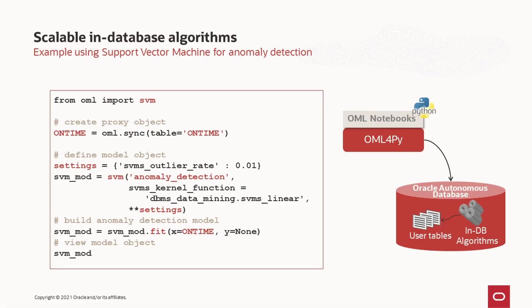In this example, we illustrate using the in-database support vector machine algorithm. After importing SVM from the OML package and getting our proxy object, we specify the desired outlier rate in the dictionary variable settings. In the SVM function, we specify that we want to do anomaly detection and use a linear kernel, then we pass the settings. Anomaly detection uses the special one-class SVM algorithm, and the outlier rate indicates our selectivity for anomaly detection. We then invoke the fit function to train the model and view the model details by displaying the result object.